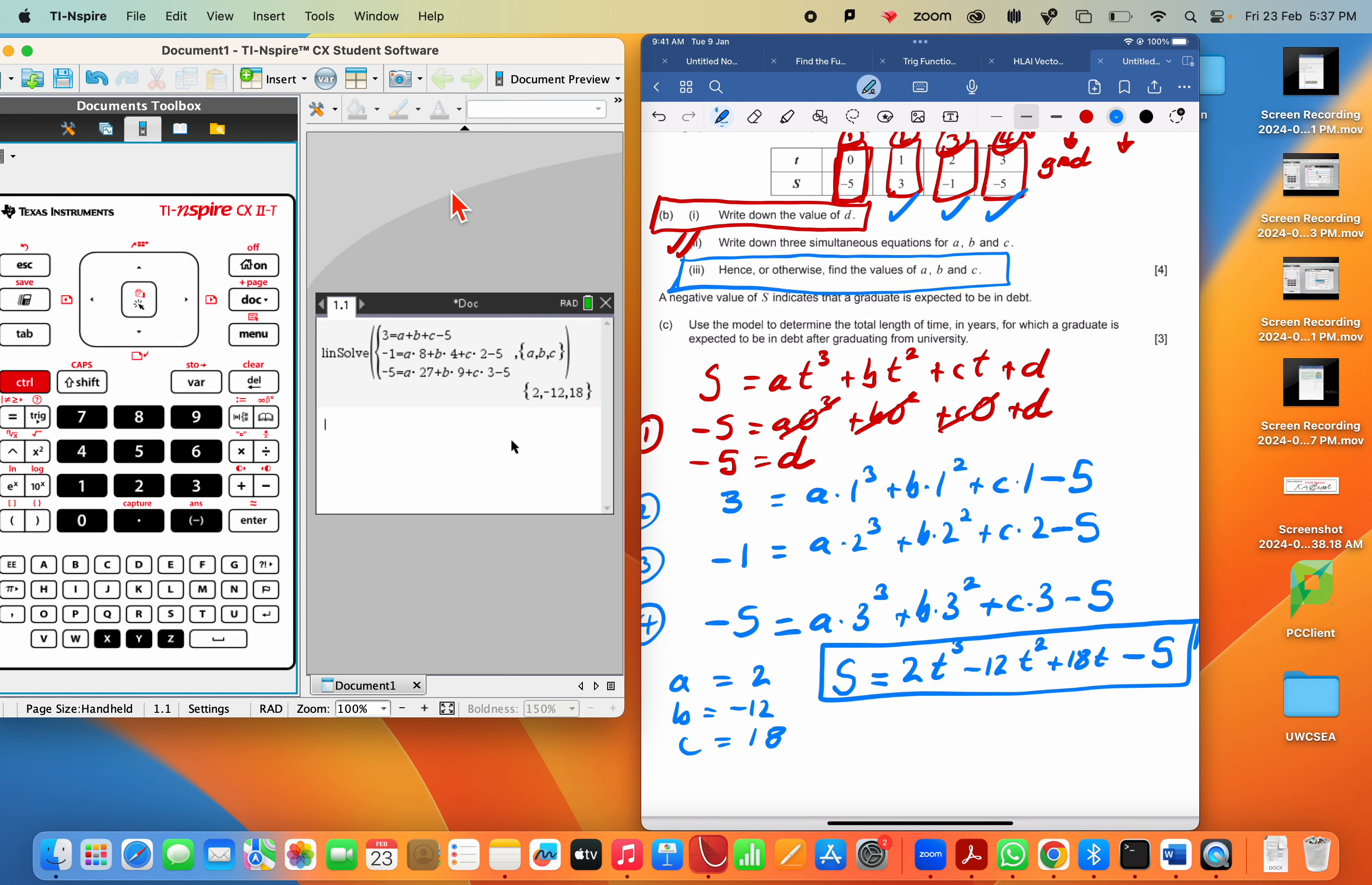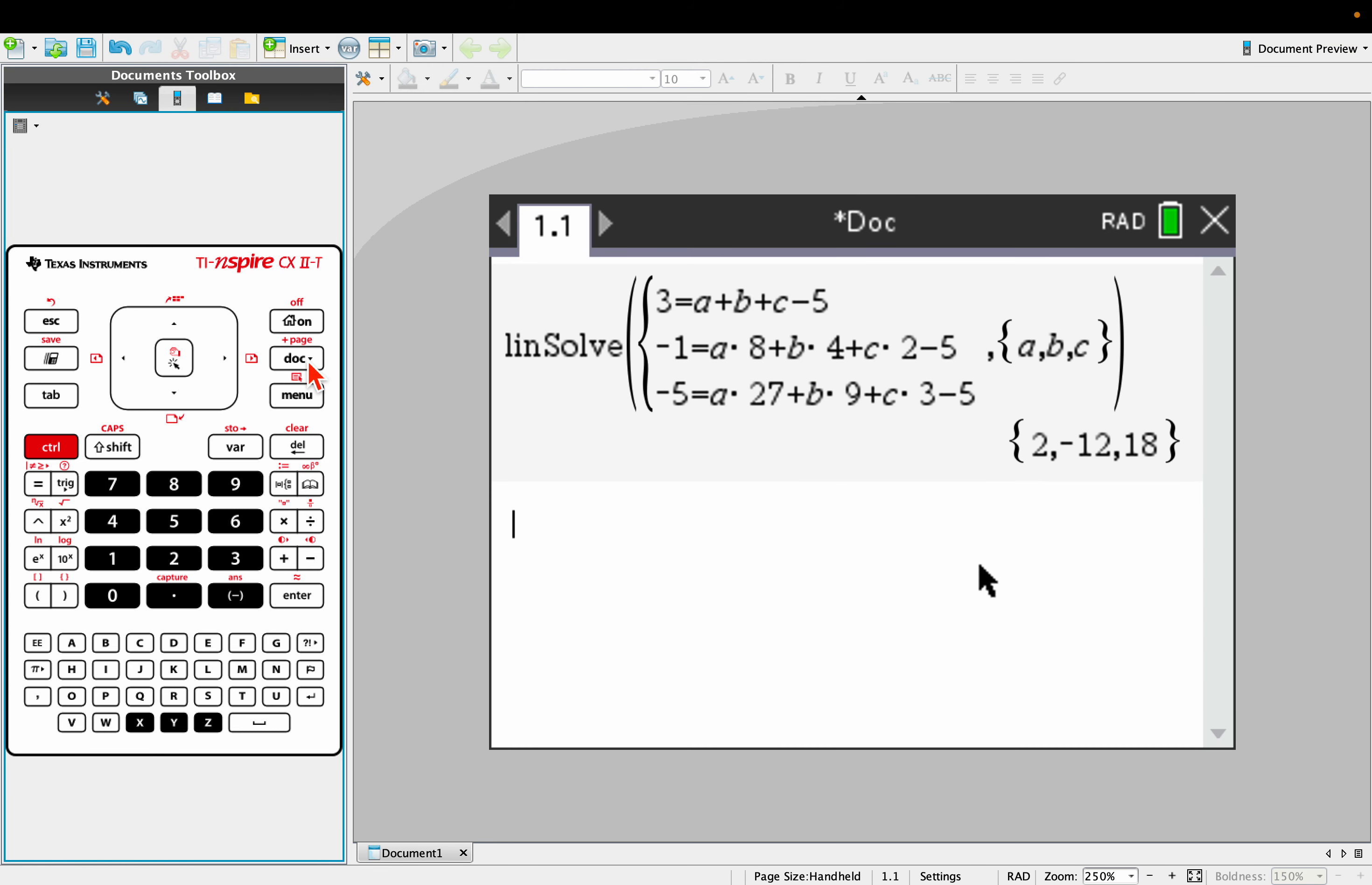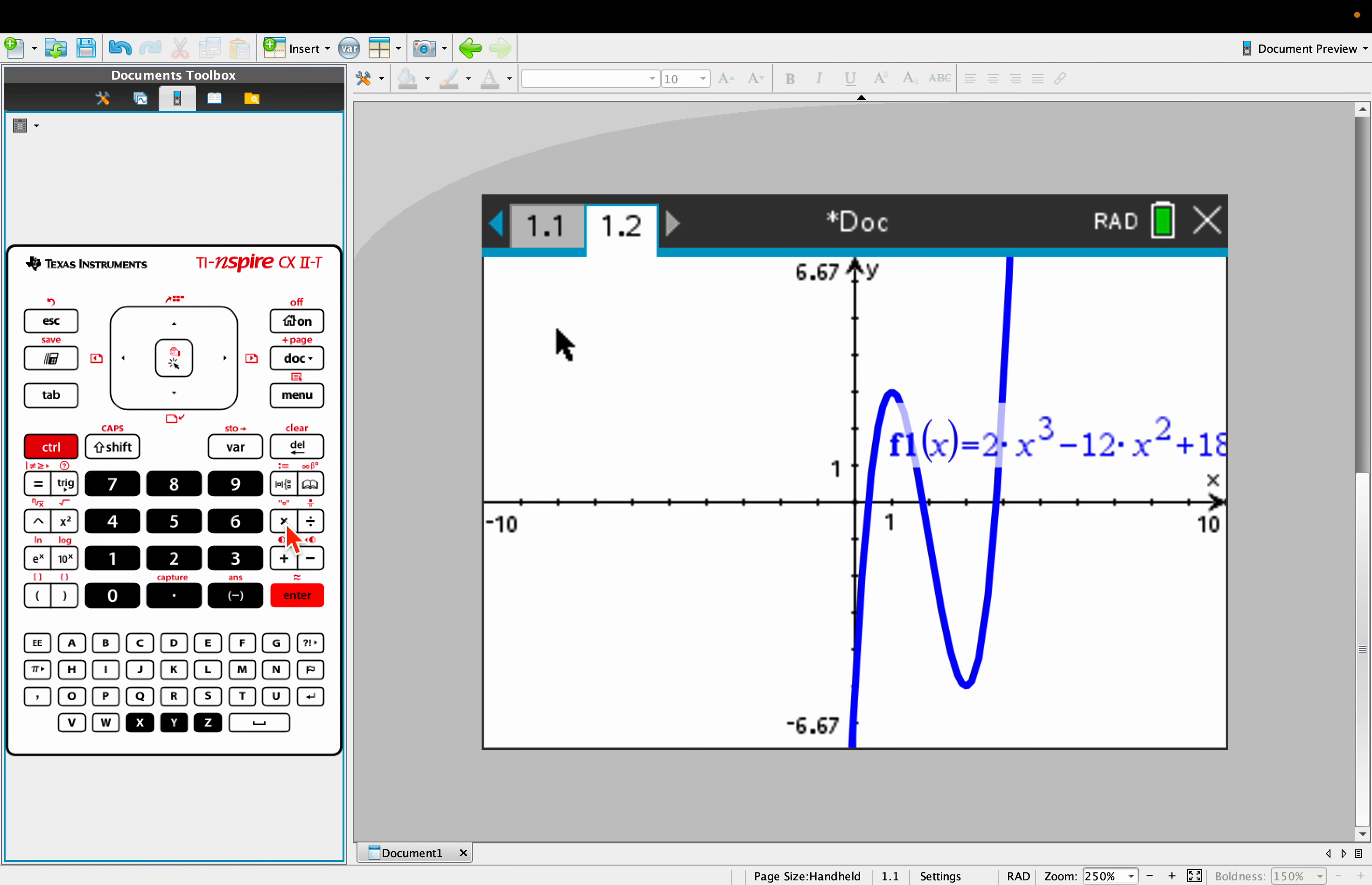I'm pretty sure we're going to have to use that model because part C here says use the model. So let's not even read the next part. Let me go back to my TI Inspire. Let me go put in a graph and I'm going to type this in. F1 of X is 2 times X to the power of 3 minus 12 times X squared plus 18 times X minus 5. Okay, it looks pretty good.